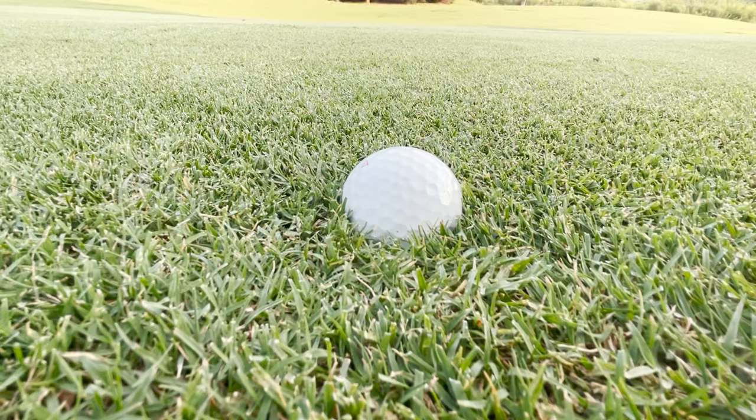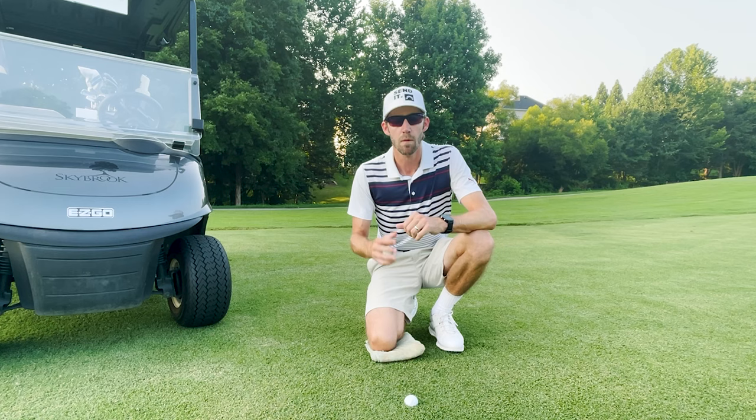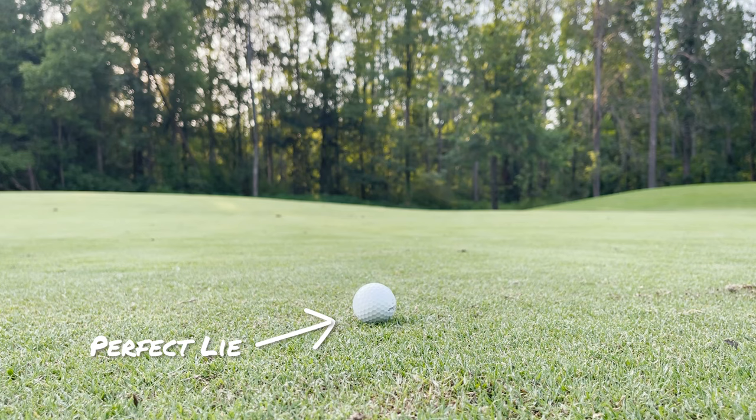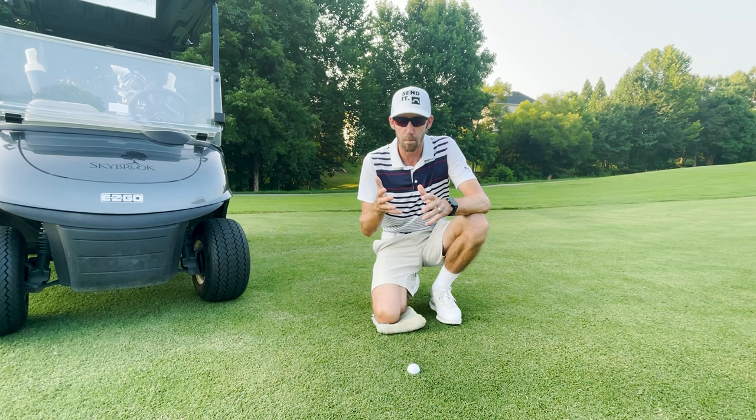I'm going to show you how we take relief in this situation. I chose this specifically because it's a good example of how you need to assess what's happened and navigate through the rules to figure out the correct procedure. Some folks might think that because this ball is now lodged in the earth, we would simply take embedded ball relief. But for a ball to be embedded, it must lie in its own pitch mark made as a result of the previous stroke — and that's obviously not what happened here. My previous stroke resulted in this ball coming to rest in the middle of the fairway with a perfect lie. So by definition, this ball is not embedded, and we would not take embedded ball relief.